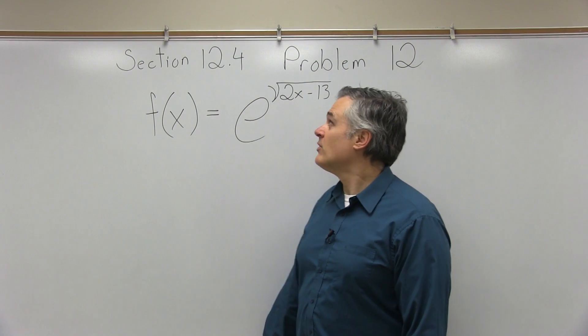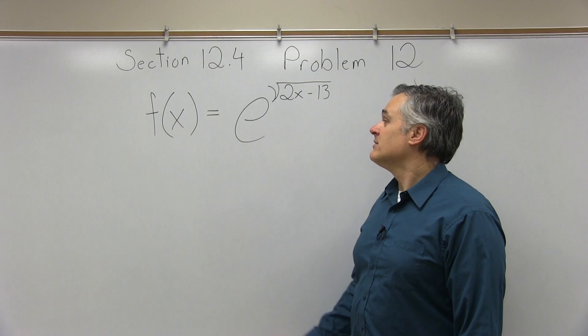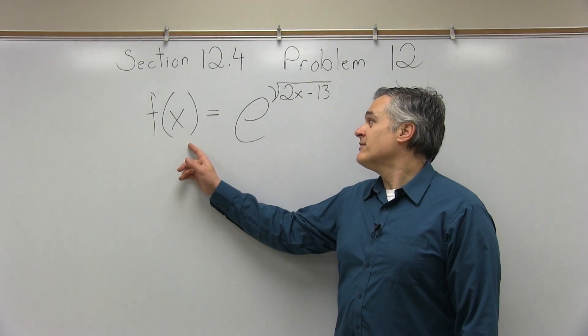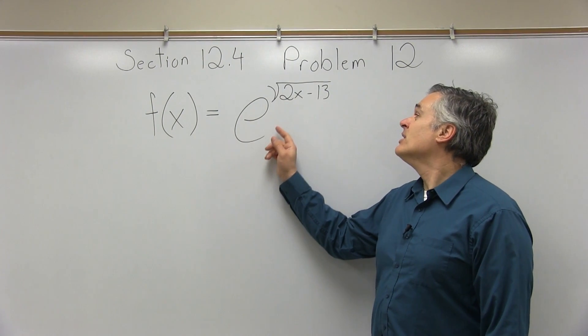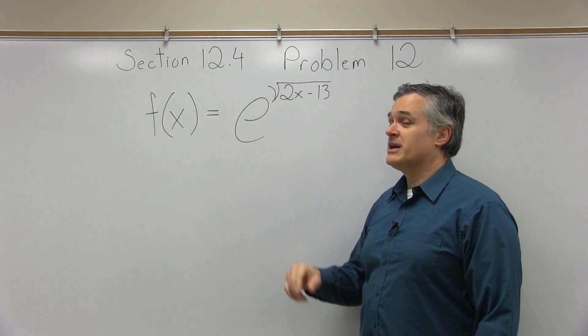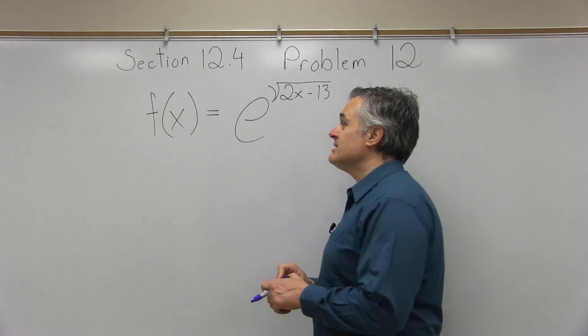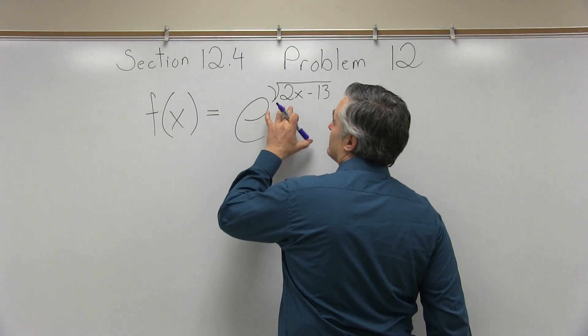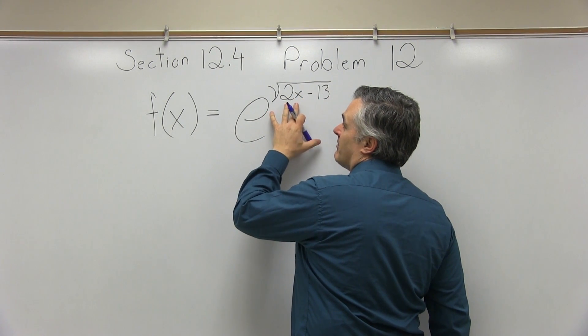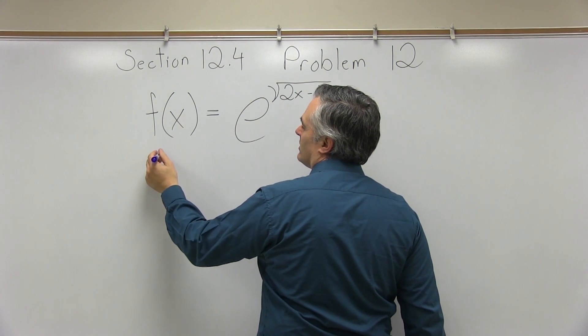This is Section 12.4, Problem number 12. We have a function which is f of x equals e to the square root of 2x minus 13 power. So overall, this is a function with some e to some stuff. But before I start even getting into the f prime, let me rewrite this stuff a little bit.